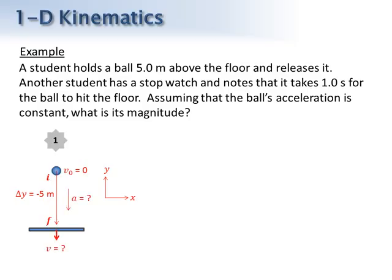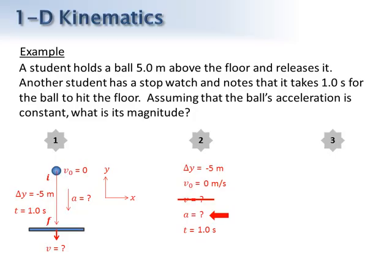The final velocity is unknown, the acceleration is unknown — that's what we're asked for — and the time is one second. The second step is to list all five variables and plug in their known values, putting a question mark for unknowns. The acceleration is what we're looking for, and the final velocity is the variable not involved in the problem at all. So in step three, we choose the equation that does not contain final velocity.